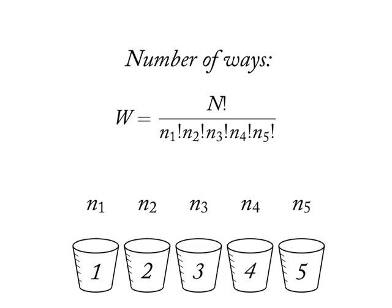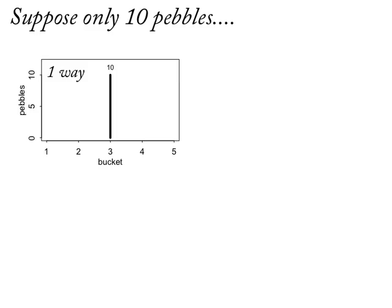The number of unique ways to realize a distribution N1, N2, N3, N4, N5 is capital N factorial — the number of pebbles, in this case 100 — divided by the product of the factorials of each bucket count. At some point in secondary school you learned this from combinatorics, and then you were like, 'I'm never going to use this.' Well, now you get to use it. It's the foundation of statistical inference. This gets big really fast when the N's get equal.